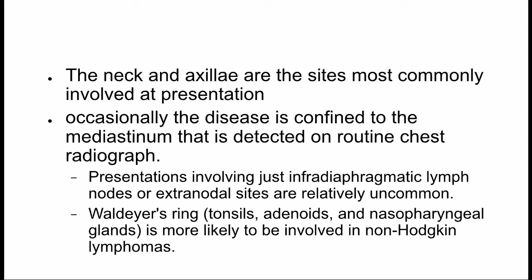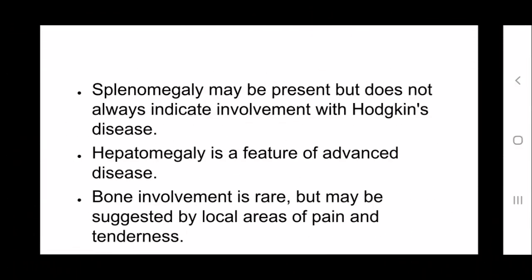Waldeyer's ring — i.e., tonsils, adenoids and nasopharyngeal glands — is more likely to be involved in non-Hodgkin lymphomas. Splenomegaly may be present but does not always indicate involvement with Hodgkin's disease. Hepatomegaly is a feature of advanced disease. Bone involvement is rare but may be suggested by local areas of pain and tenderness.